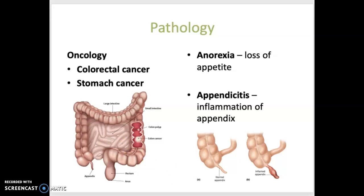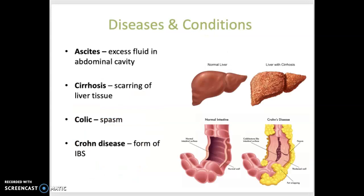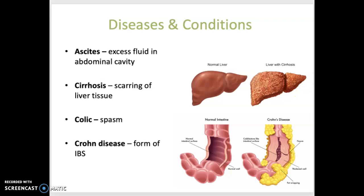Some other diseases and conditions: anorexia means loss of appetite. Appendicitis — again, the "-itis" ending means inflammation of the appendix. Ascites is excess fluid in the abdominal cavity, and quite often this results from some sort of liver disease. Cirrhosis is scarring of liver tissue, which results in decreased liver function, often due to liver disease as well. Colic is a spasm in any hollow soft organ.